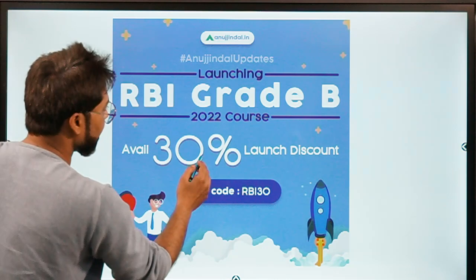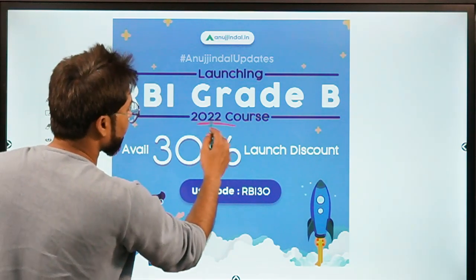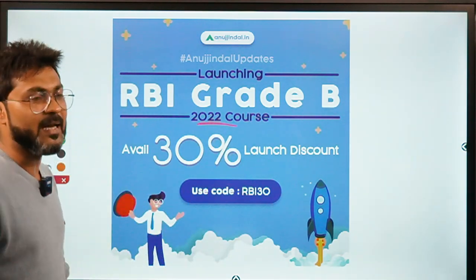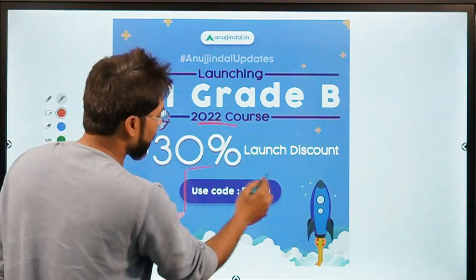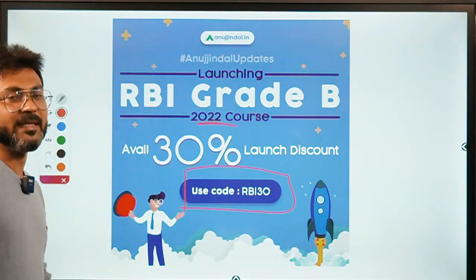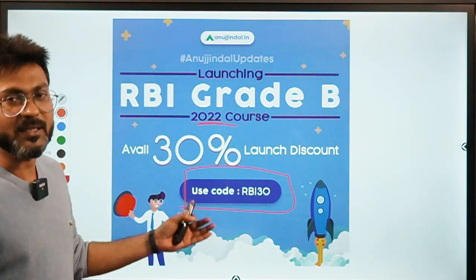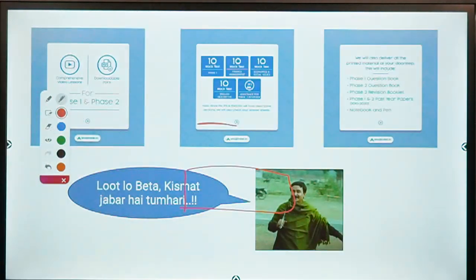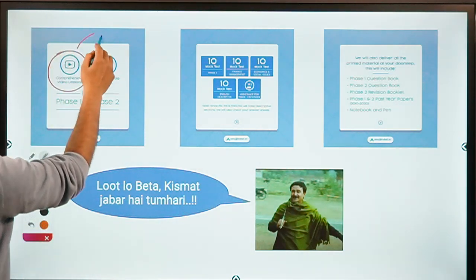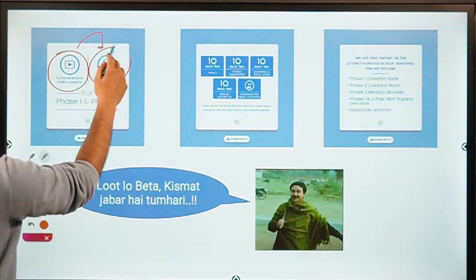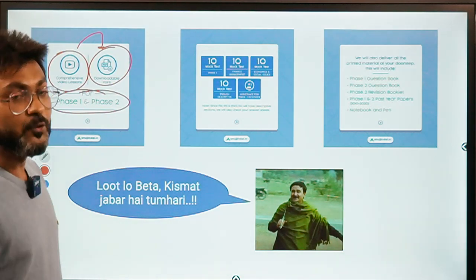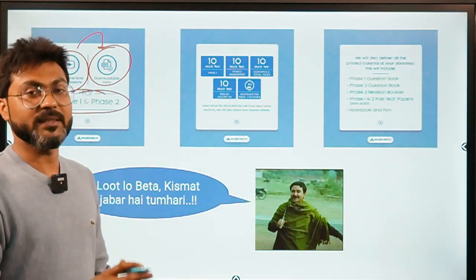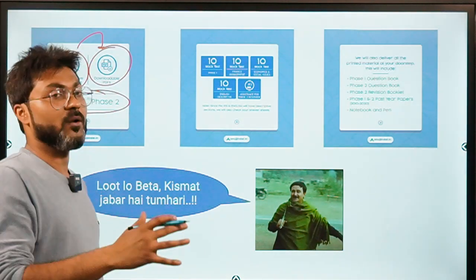We have launched our 2022 course for RBI Grade B. You can avail this course by using the coupon code RBI30 and get a 30% discount. What you will get in the course is very unique — comprehensive video lessons and downloadable PDFs for both Phase 1 and Phase 2, and 10 mock tests for each subject.